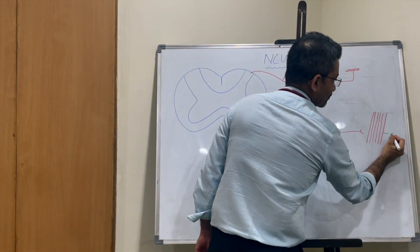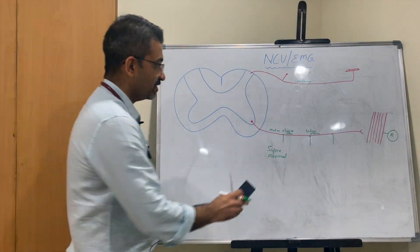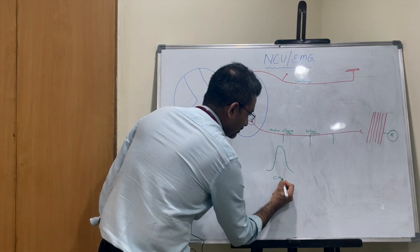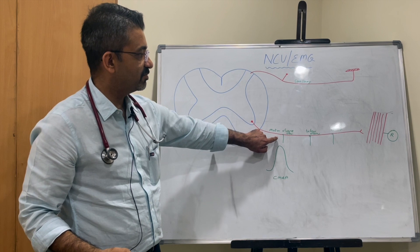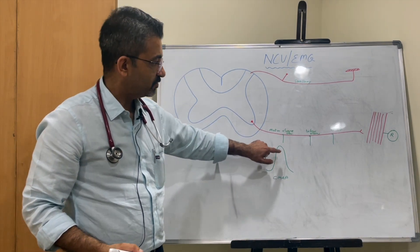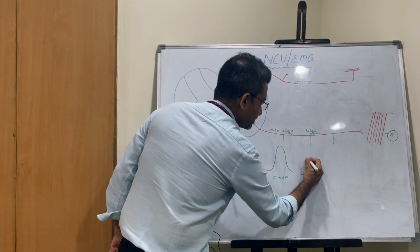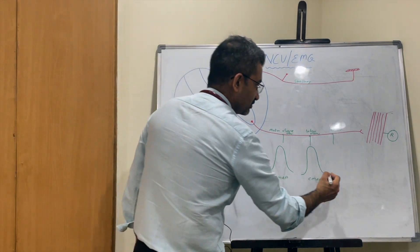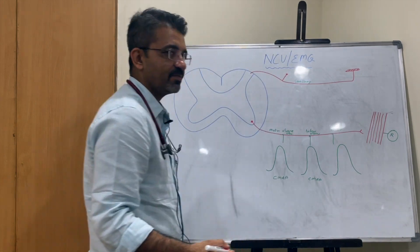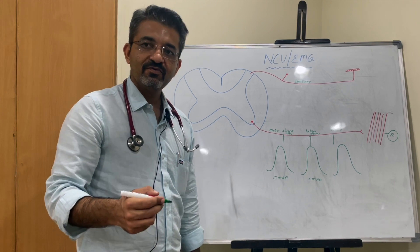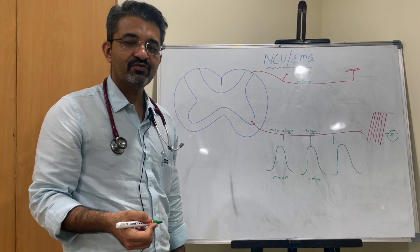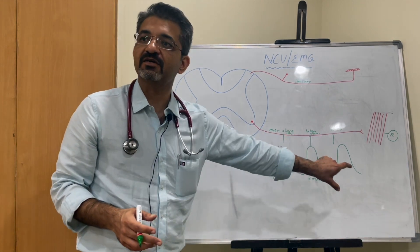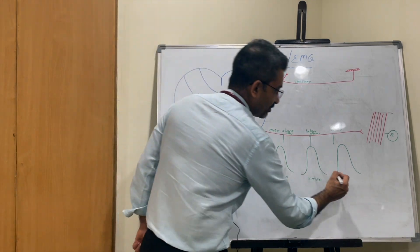You have a recording electrode over the muscle, which records an action potential. This is known as the compound muscle action potential, or CMAP. When you stimulate above the elbow, below the elbow, or above the wrist, you get a good CMAP of similar amplitude. Normal values are established by testing volunteers, so for age and sex we have a normal distribution of CMAP amplitude for the ulnar nerve.